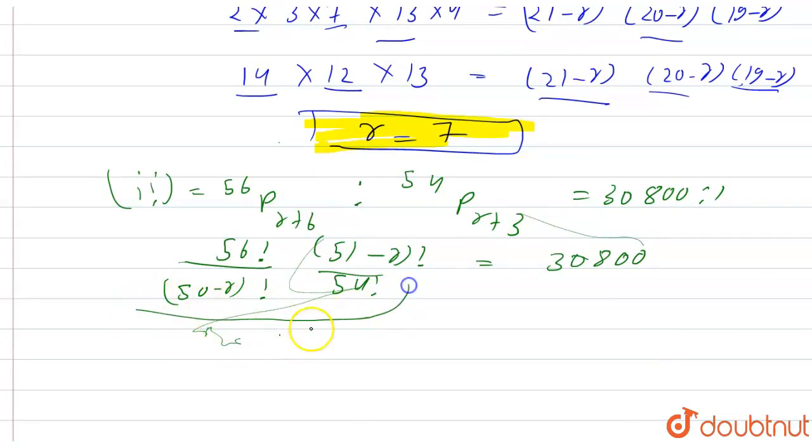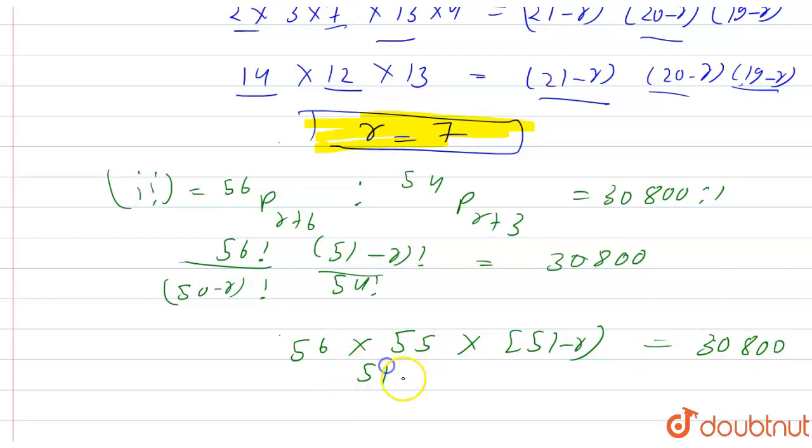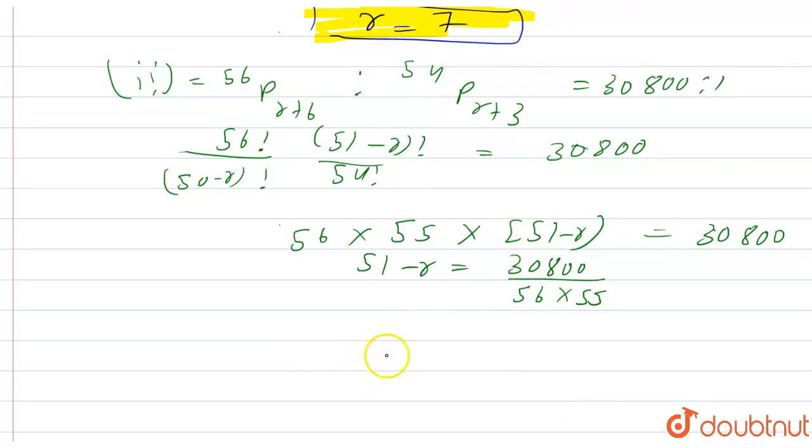On solving this, we will get 56 into 55 into 51 minus R. Now, 51 minus R is equal to 30,800 divided by 56 into 55. Therefore, R will come out to be 41 from here and that is the answer for second part, R is equal to 41. Thank you so much everyone.